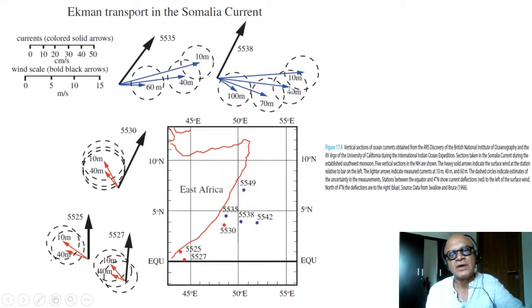You have a bit of the Ekman spiral, and transports are to the right of the winds, which is what you expect in the northern hemisphere. Amazingly, in these boundary regions, the transports are following the Ekman spiral but they are to the left of the winds.